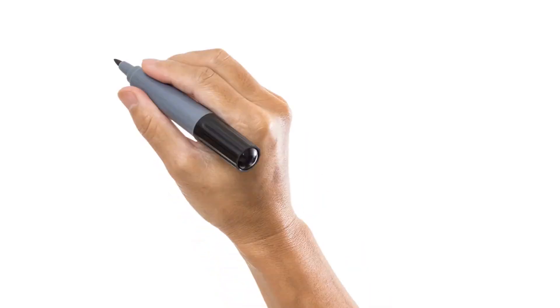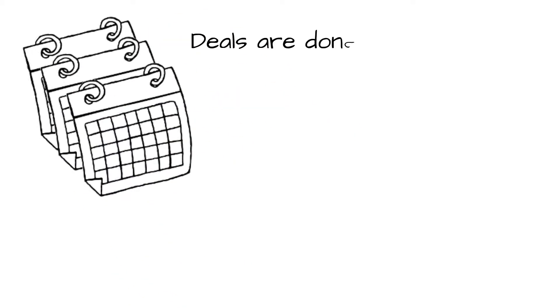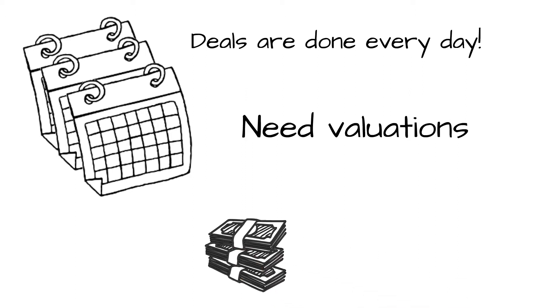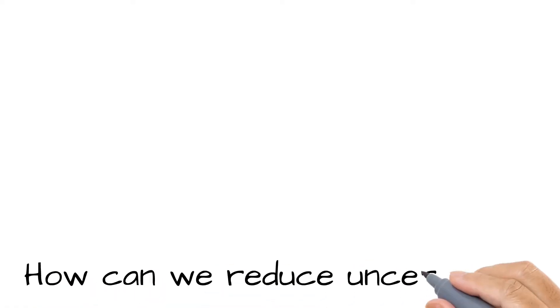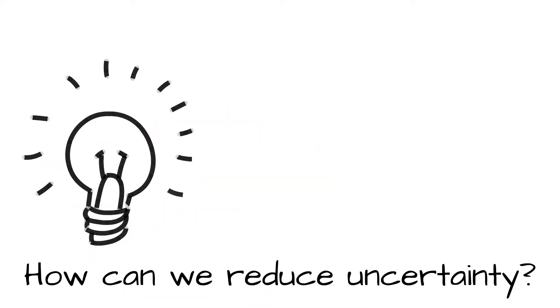Well, the fact of the matter is deals are done every day, and in order to do a deal, regardless of whether it's equity or convertible debt, you still have to have a valuation. All investment types have uncertainty, whether you're investing in real estate, stocks, bonds, or venture capital. They all have uncertainty built into the valuation models. So how can we reduce uncertainty in venture capital valuation models so that we can come to reasonable outcomes?